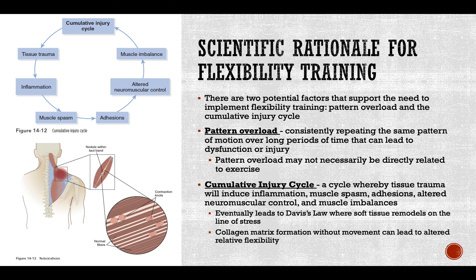The cumulative injury cycle begins with tissue trauma, which leads to inflammation — swelling and tenderness. The normal muscle fibers develop knots called adhesions. That inflammation leads to muscle spasming or involuntary contractions, which create those adhesions. The adhesions cause the muscle to move incorrectly, leading to muscle imbalance, and the cumulative injury cycle keeps progressing — you now have a constant issue of pain.